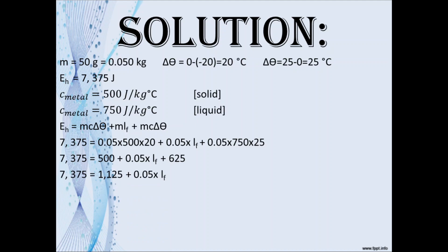So 500 plus 625 is 1,125. We transpose that and subtract it from 7,275 and that will give us 6,250. So to find L we will take 6,250 and divide it by 0.05. And that gives us the specific latent heat of fusion for this particular metal to be 125,000 joules per kilogram.